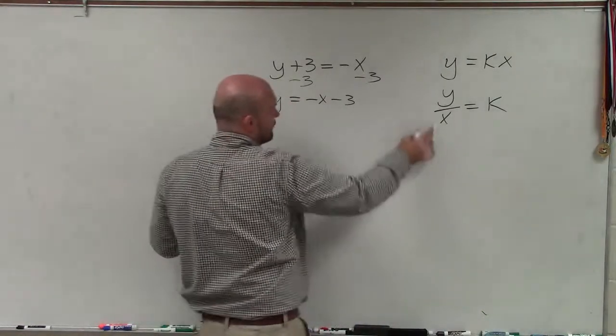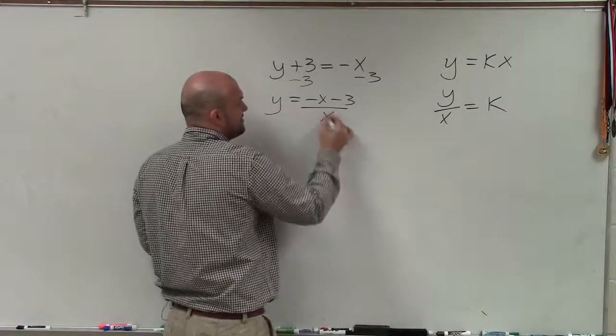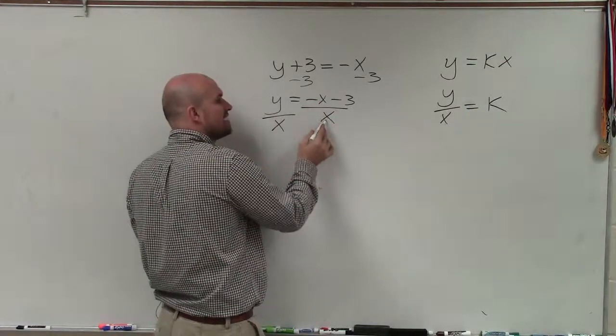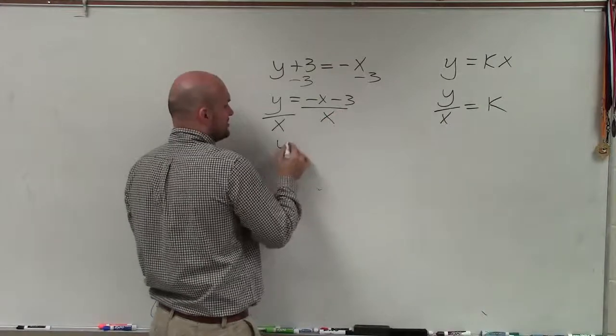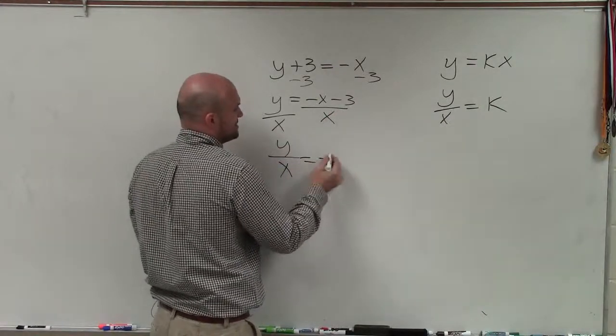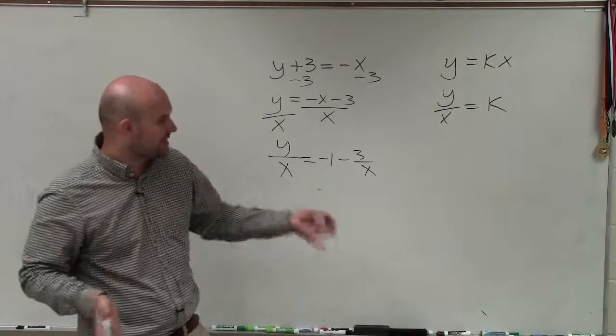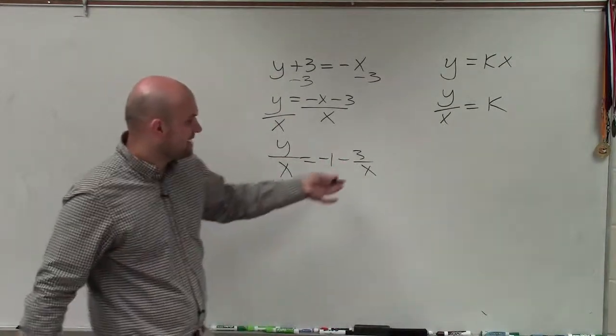And if I wanted to rewrite it in this format, divide by x, I would have to divide by x on both sides. But when I divide by x on the right side, I got to make sure I divide by x on both terms. So therefore, I'd have y over x equals negative 1 minus 3 over x. And I'm never going to be able to get rid of that x right over there just on the right side.